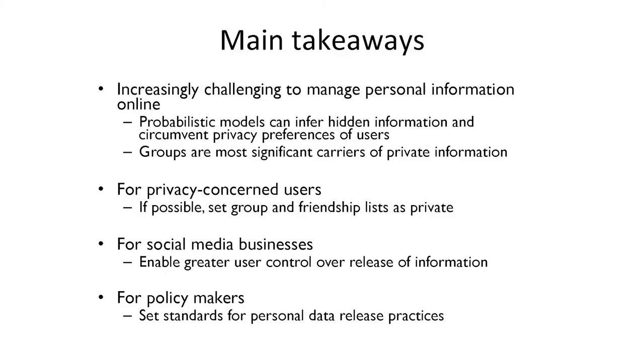The main takeaways are: it is increasingly challenging to manage personal information online; probabilistic models can infer hidden information and circumvent users' privacy preferences; groups are the most significant carriers of private information — we initially hypothesized friends would be most significant, but it's really more about your interests and the things you like. For privacy-conscious users, the recommendation is to set your group and friendship lists as private. For social media businesses, the recommendation is to enable greater user control over information release. For policymakers, we'd like to see more standards for personal data release practices.